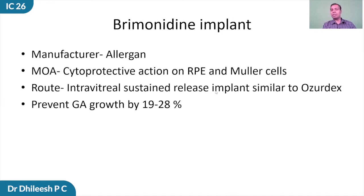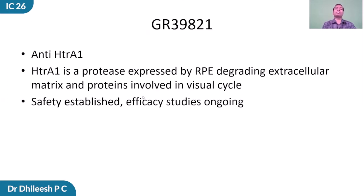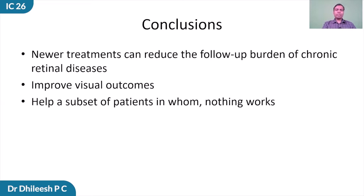Brimonidine implant, manufactured by Allergan, acts by cytoprotective action on the RPE and Muller cells; it is an intravitreal sustained-release implant and prevented geographic atrophy growth by 19 to 28%. The last drug is GR3-9821, which is an anti-HTRA1 antibody — a protease expressed in RPE degrading extracellular matrix. In phase 1 trials, safety has been established and efficacy trials are still ongoing. In conclusion, newer treatments for these diseases can reduce the follow-up burden of these chronic retinal diseases, improve visual outcomes, and help a subset of patients in whom nothing works. Thank you.